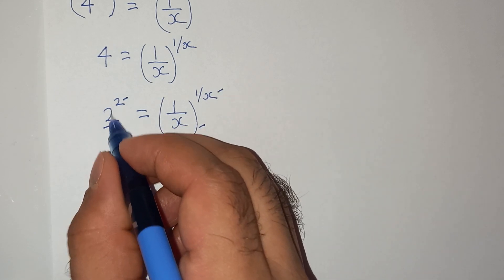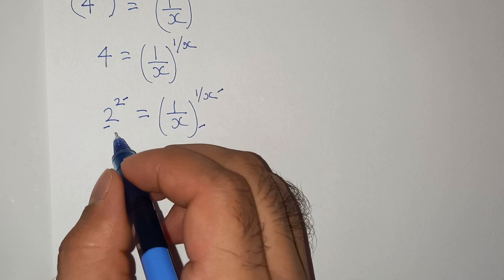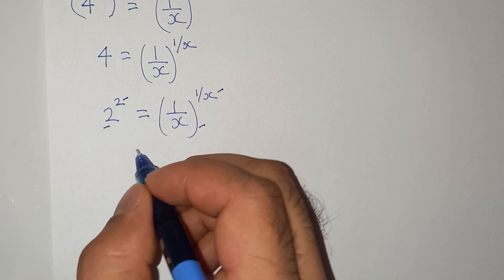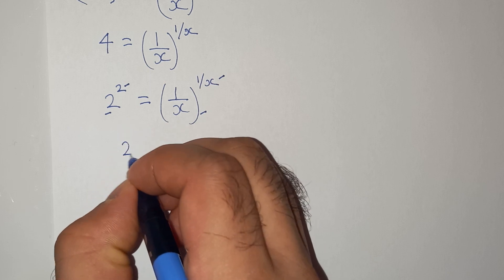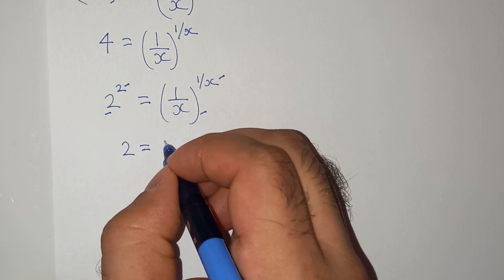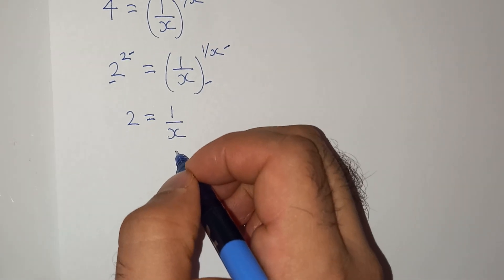So you can see these are the same numbers: same base and same exponent. So we can conclude that 2 = 1/x. Right?